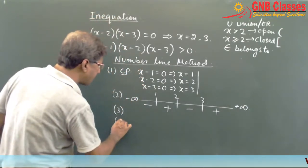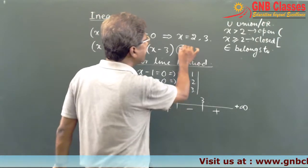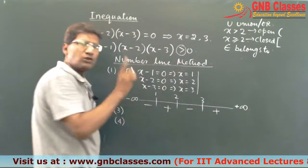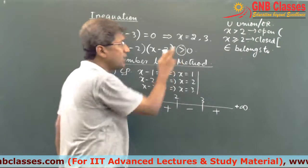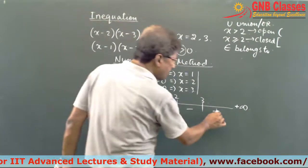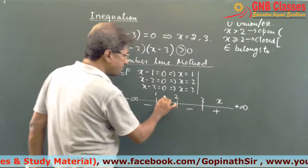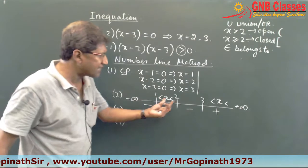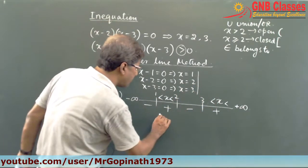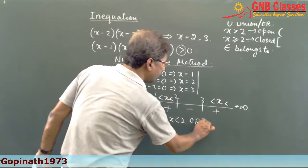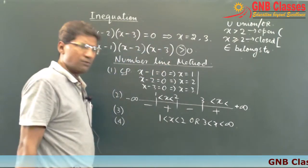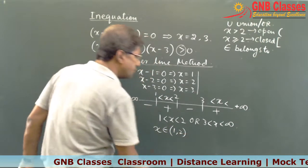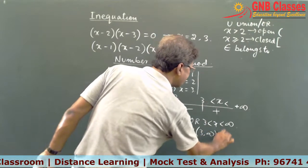The fourth step: check what sign is given in the inequation. If it is greater than, choose the positive blocks. If it is less than, choose the negative blocks. Since here it is greater than, we choose the positive blocks. Put x in those blocks and give the interval sign. So the answer is: 1 less than x less than 2, or 3 less than x less than infinity. In mathematical notation: x belongs to open 1, open 2, union open 3, open infinity.